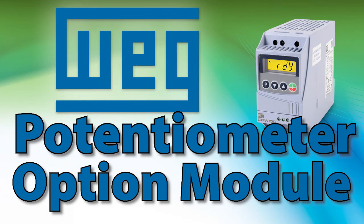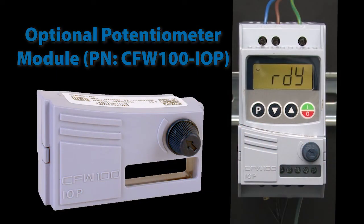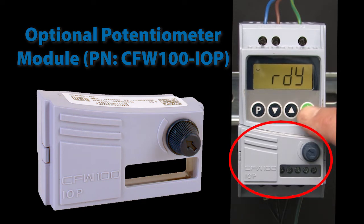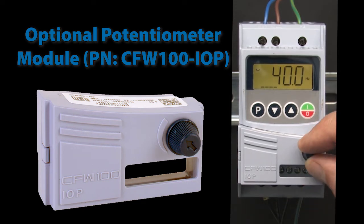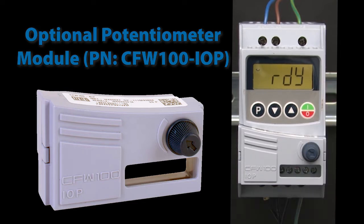The WEG CFW 100 has an optional potentiometer module. You can use that potentiometer for whatever you want, but most of the time it's used to control the frequency of the drive or the speed of the motor. And it's super easy to set up.